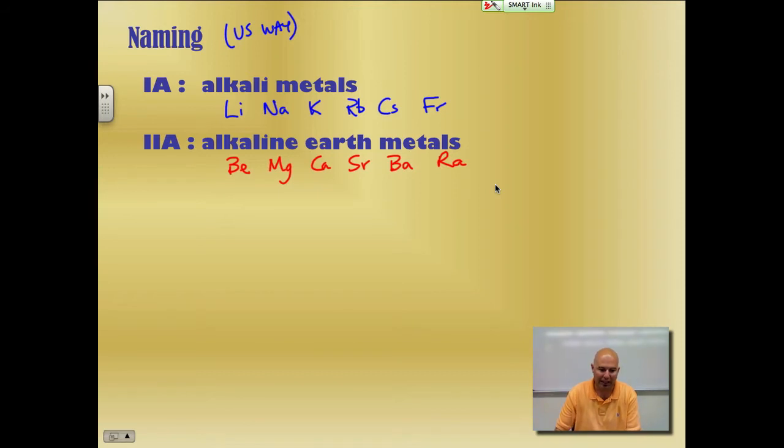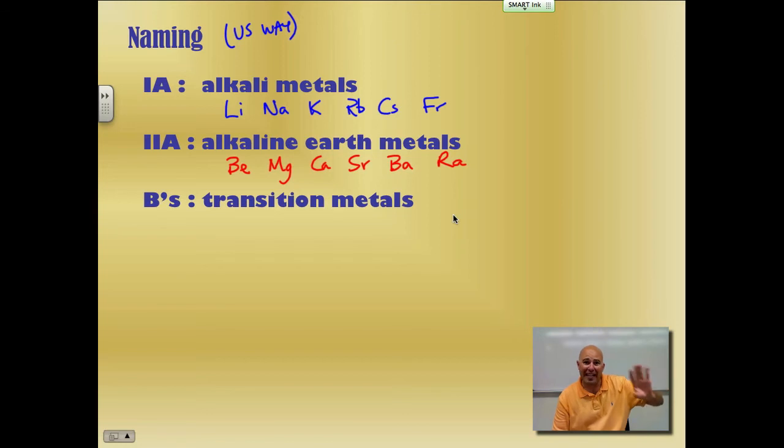So those are your alkaline earth metals. We're going to talk about some properties of those as we move along. So the Bs in the U.S. way are called the transition metals. Now, the ones below the F block, we call those the inner transition metals. So F block are your inner transition metals.